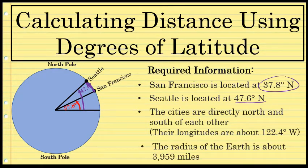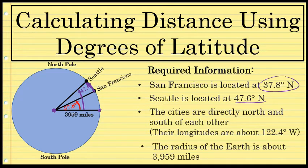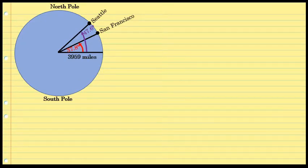I'll also need to know the radius of the earth, which is about 3,959 miles — the distance from the center of the earth to the edge in this diagram is 3,959. This is enough information to calculate the distance from Seattle to San Francisco.